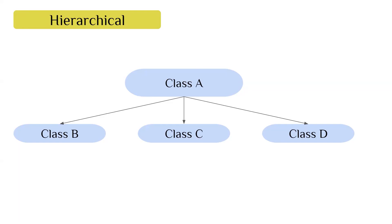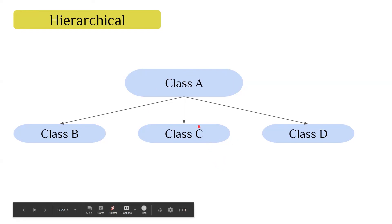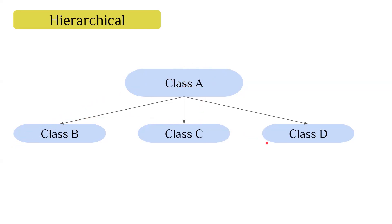The main benefit of inheritance is that you don't have to write specific code again and again. If you have declared methods and variables in class A and you just write the keyword 'extends', you do not have to write the whole code again. Also remember that a child class can only inherit what is public in the parent class — if something has been kept private in class A, classes B, C, and D won't be able to inherit it. That covers inheritance — thank you for watching.